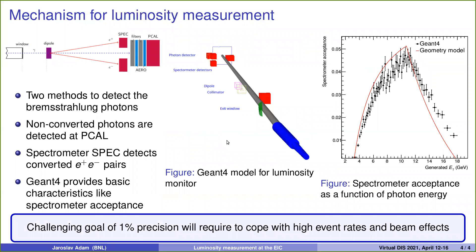The mechanism to measure luminosity will be based on two methods. Either direct non-converted photons will be detected in a photon calorimeter, or for a precise measurement we will measure conversion e-plus e-minus pairs from photon conversions.